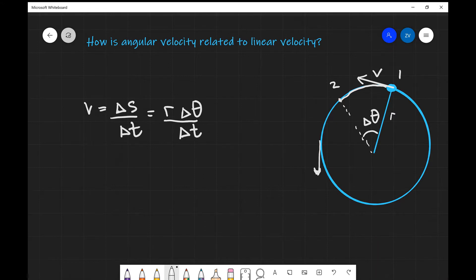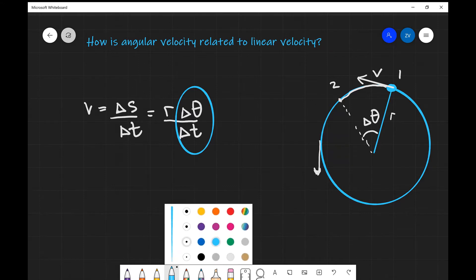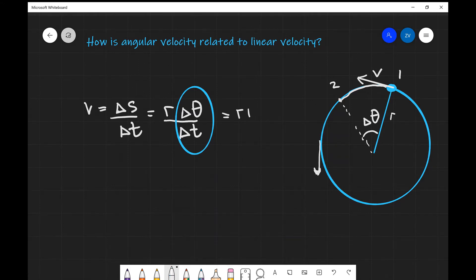Well hang on a minute, have a look at this. So delta theta over delta t. This is actually our angular velocity, the very definition of angular velocity. So this is going to equal r times omega.